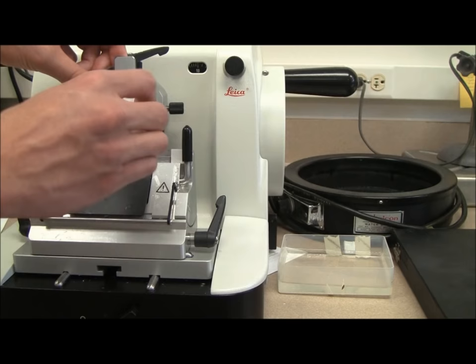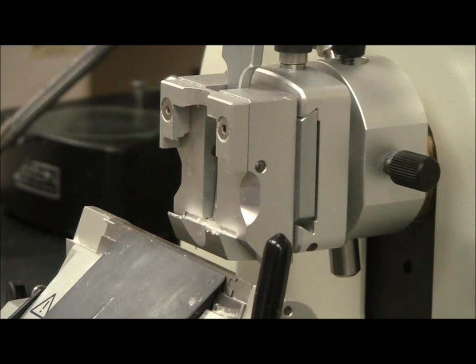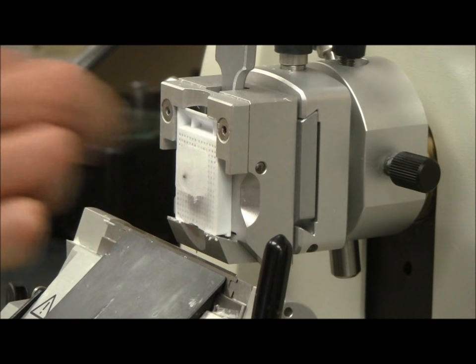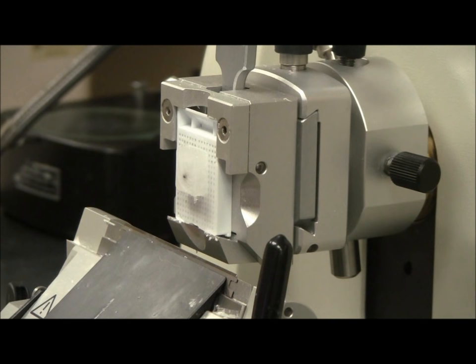Once the tissue is exposed, remove the block and place it in water. After 24 hours, reclamp the block and use a razor blade to cut away some of the extra wax surrounding your tissue. This will allow you to fit more sections on each slide.